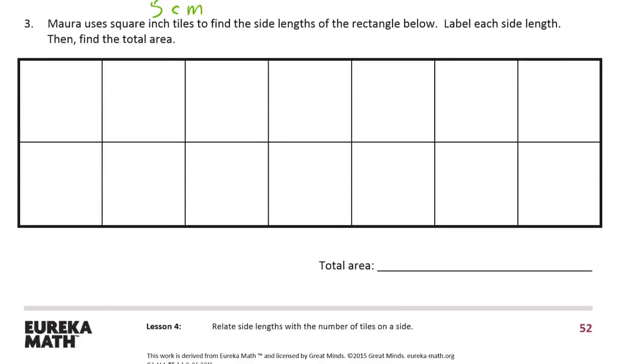Mara uses square inch tiles to find the side lengths of the rectangle below. Label each side length and then find the total area. So that has to be one, two, these are inches, right? So this is two inches. So this side has to be two inches.